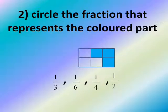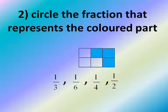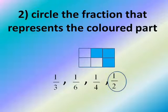Number 2: Circle the fraction that represents the colored part. We have 3 colored parts from 6. But we don't have 3 over 6 in the multiple choice. We have 3 colored and 3 uncolored. The number of colored equals the number of uncolored — half colored and half uncolored. The fraction is one half.